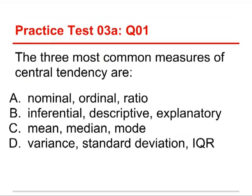The three most common measures of central tendency are — and the choices are: nominal, ordinal, and ratio; or inferential, descriptive, and explanatory; or mean, median, and mode; or variance, standard deviation, and IQR.